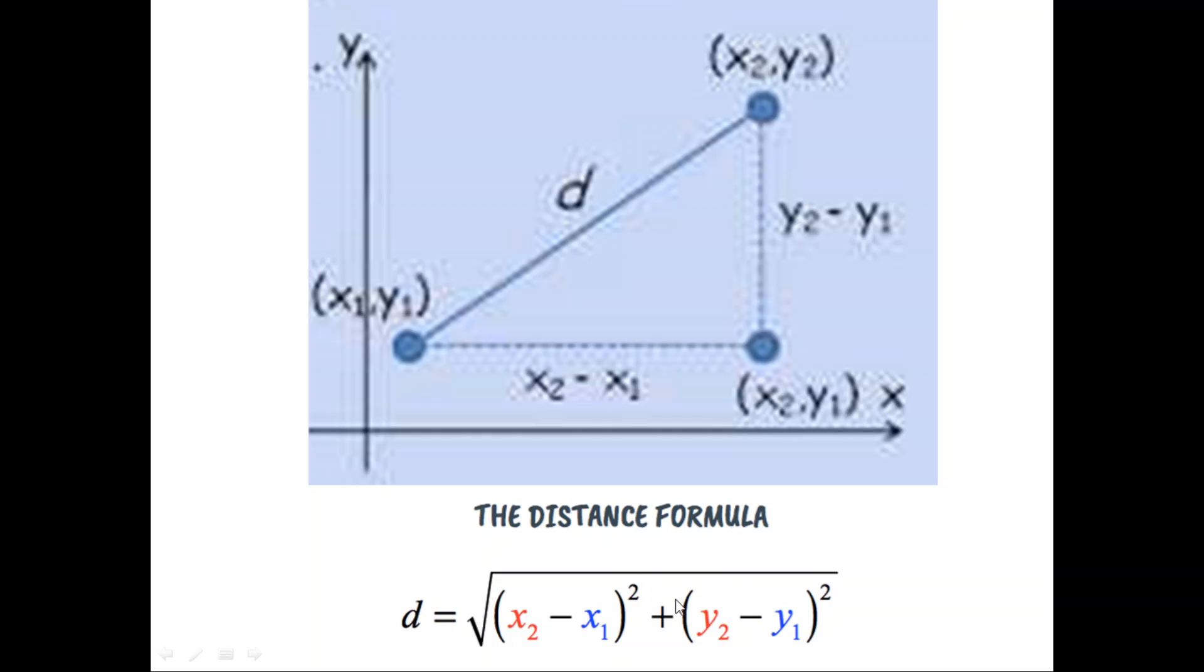If we square those and add them together, that would give you the square of the length of the line. So the length of the line would be the square root of that.